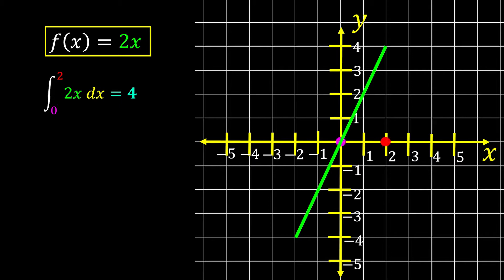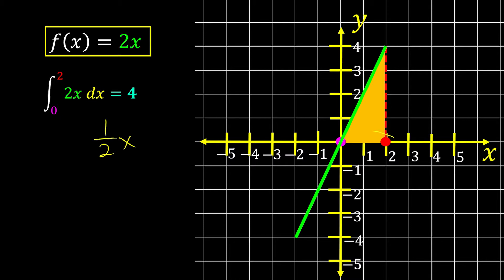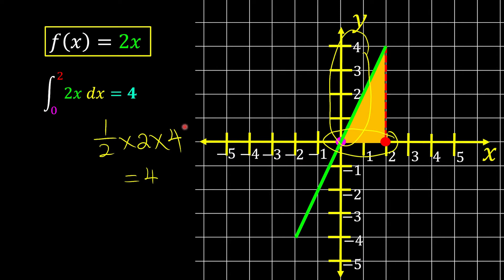We look at the boundary, which is 0 and 2, and shade the region they cover in yellow. Let's verify by finding the area directly, since this is just a triangle. The area of a triangle is one-half times base times height — the base is 2 and the height is 4. Computing this gives us 4, confirming that integration tells us the area under the curve.